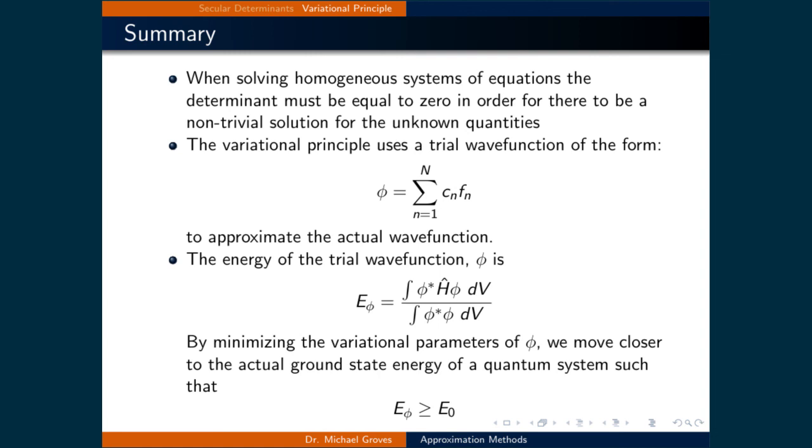And by minimizing the variational parameters of phi, we move closer to the actual ground state energy of a quantum system, such that the energy of the trial wave function will always be greater than or equal to the actual ground state energy of the system.